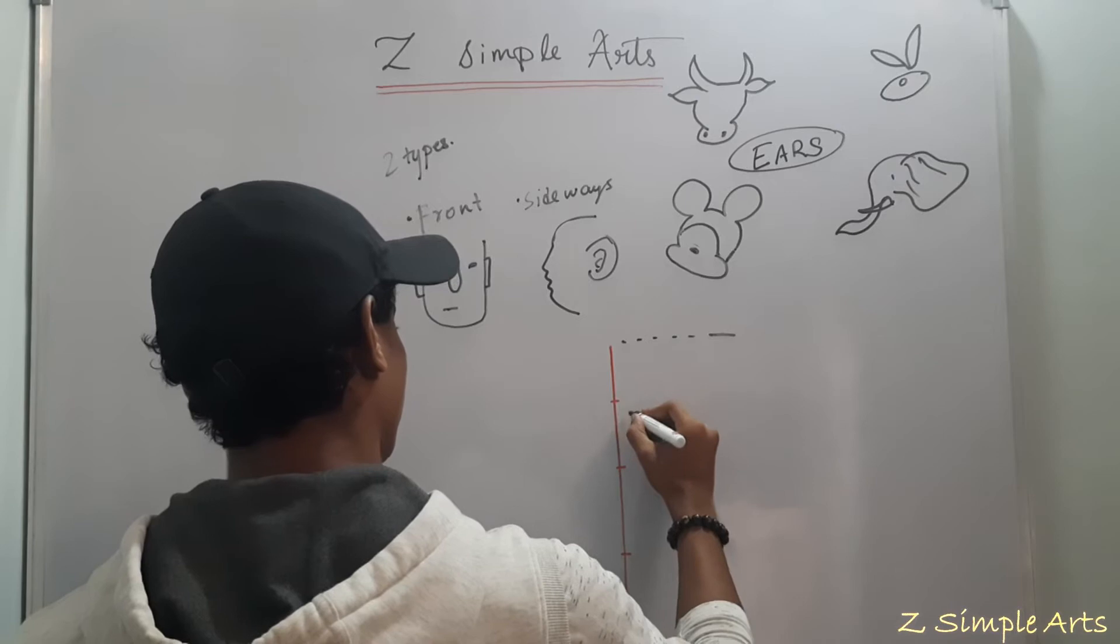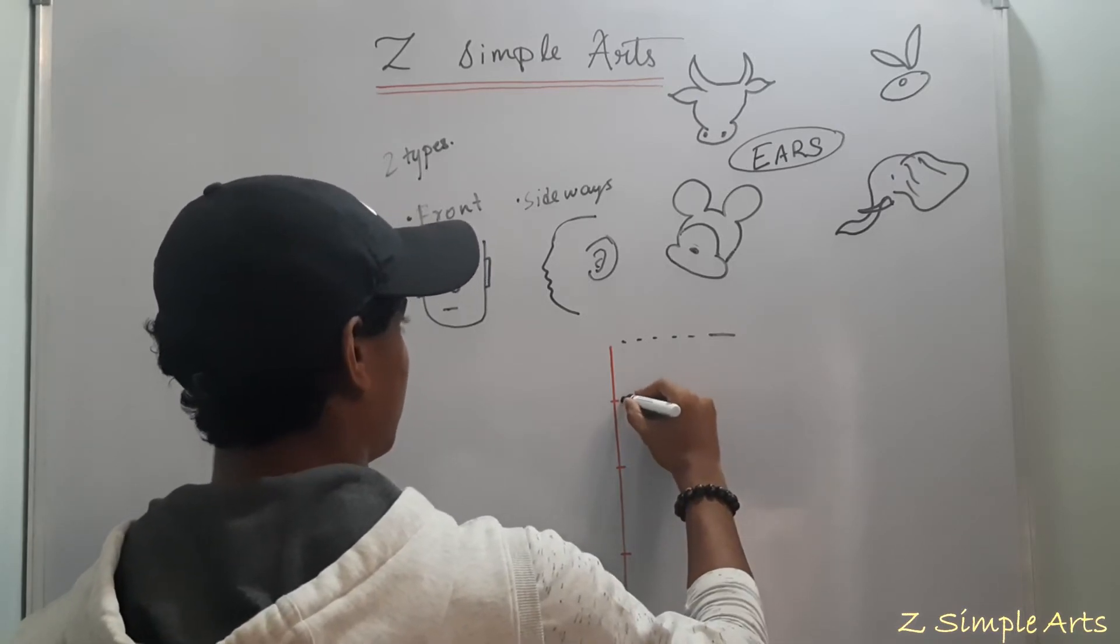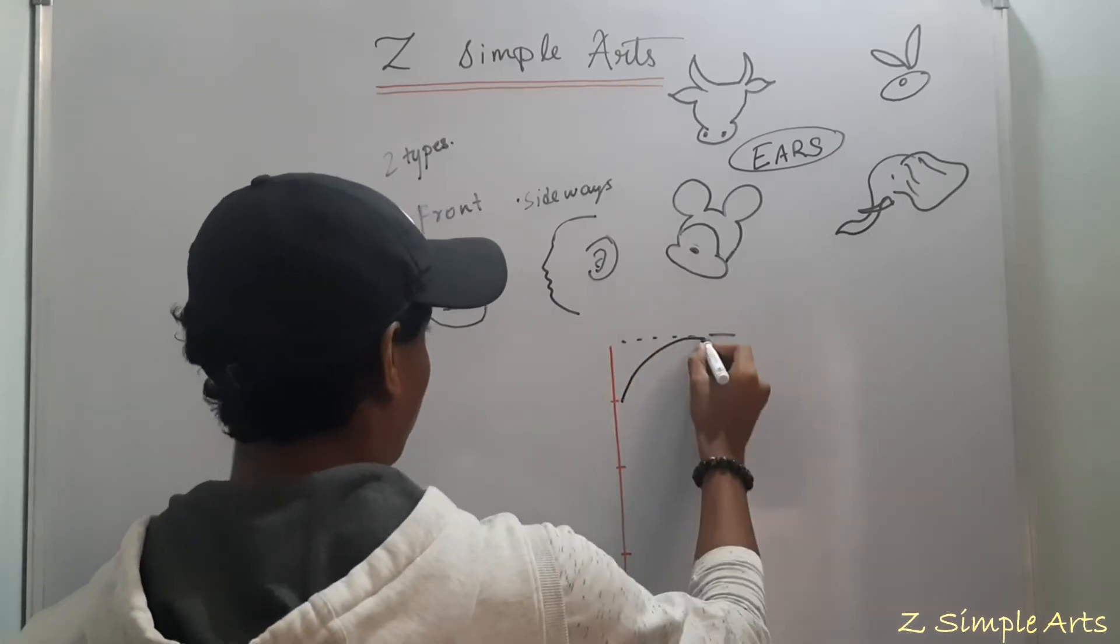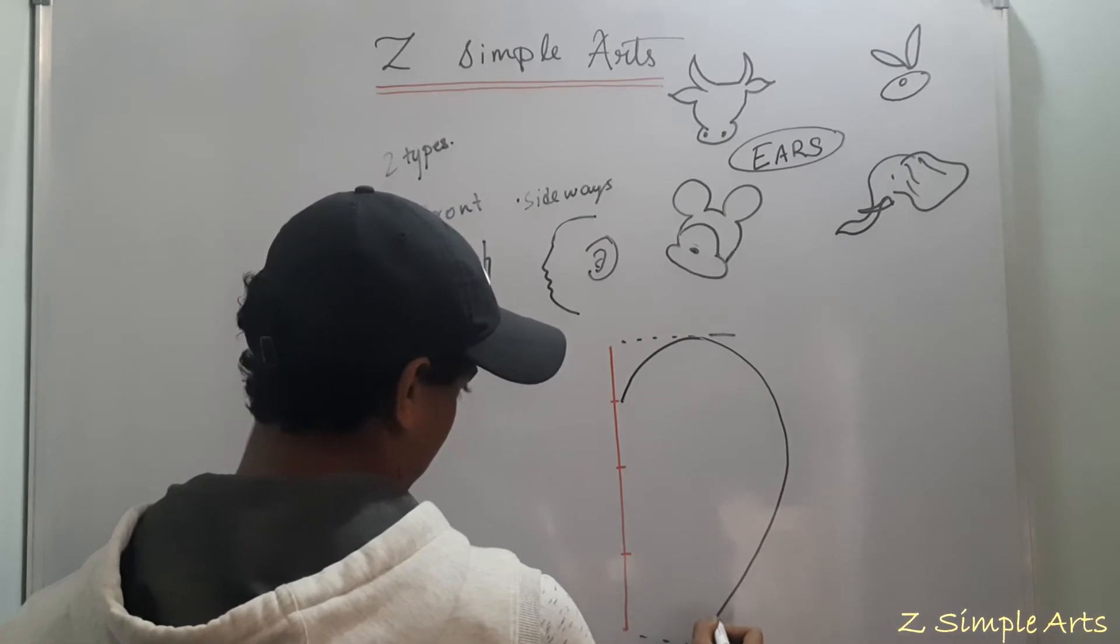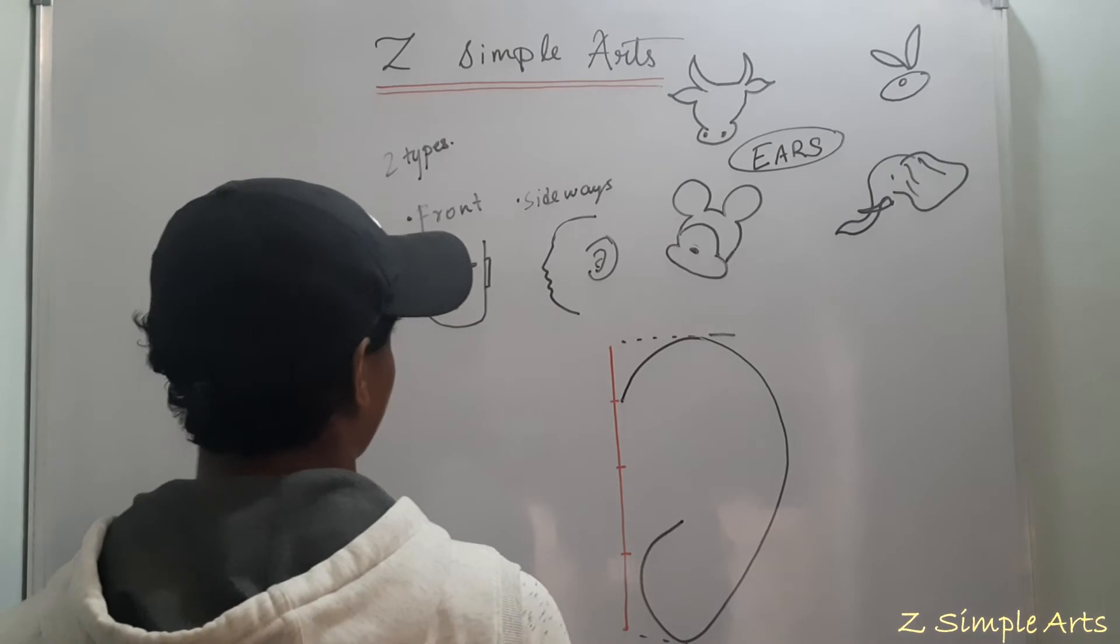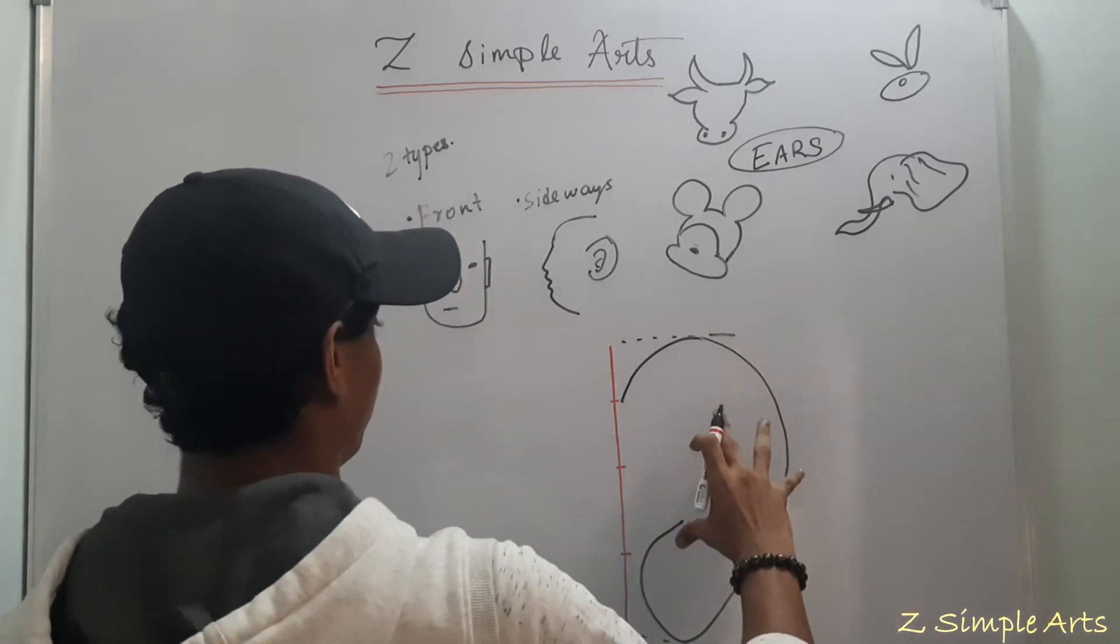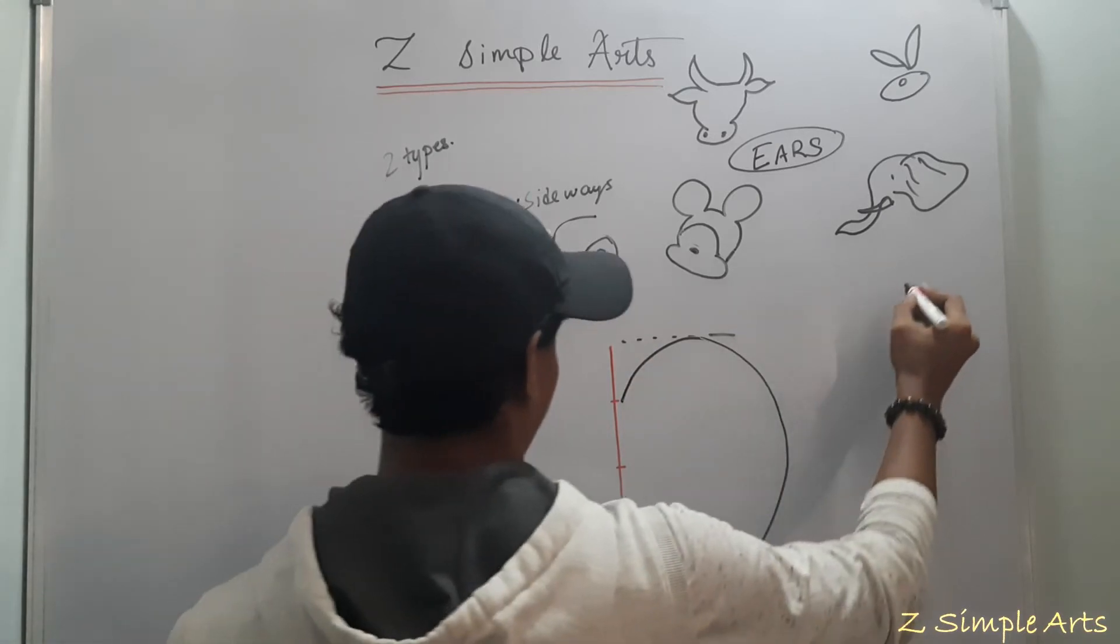So the limits are within this. Start here. Keep a point. Draw a slight curve. And then, what did I just do? I know. It's confusing for you guys. So I have put this thing. I have compared the shape of the ear to something similar which you might remember.